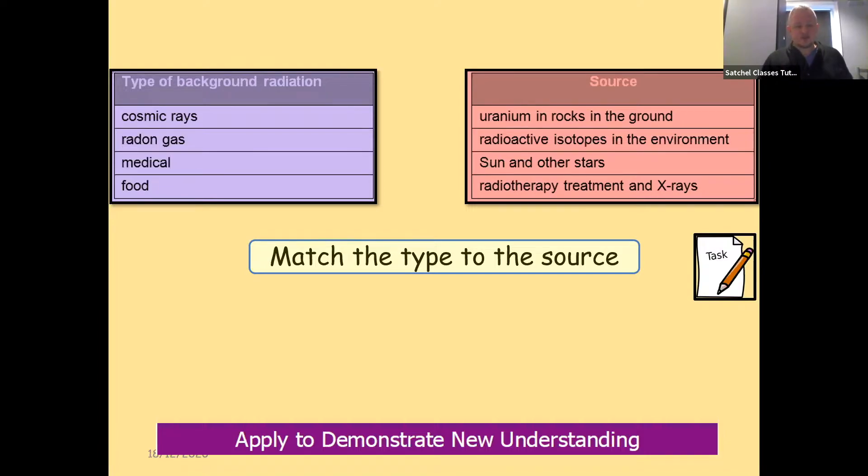Cosmic rays, as we've already mentioned, they're from the sun and other stars. The most common source that's averaged across the UK is radon gas present from uranium rocks in the ground.